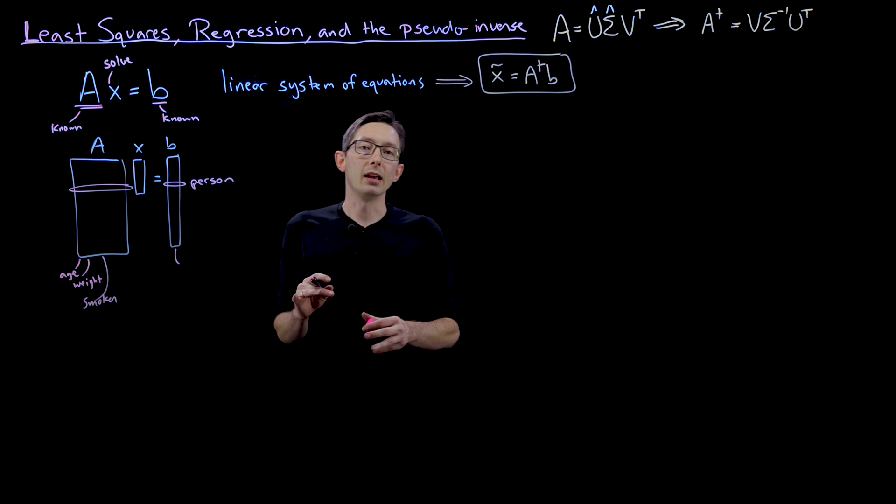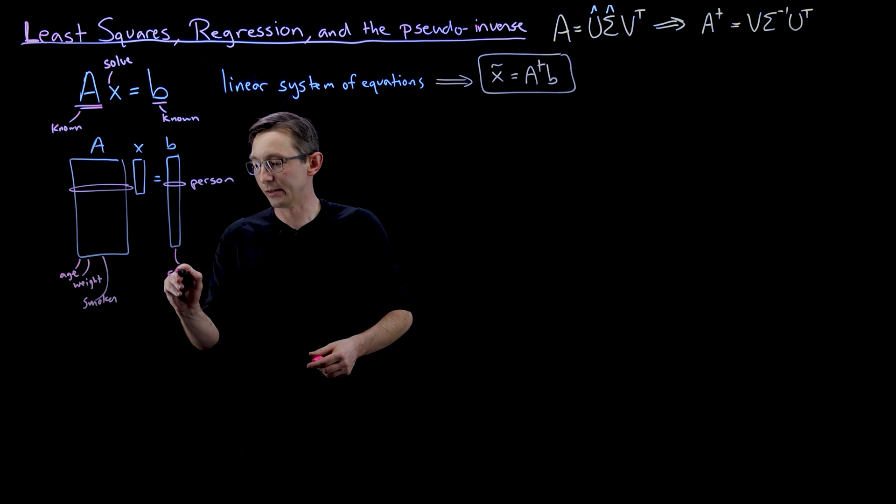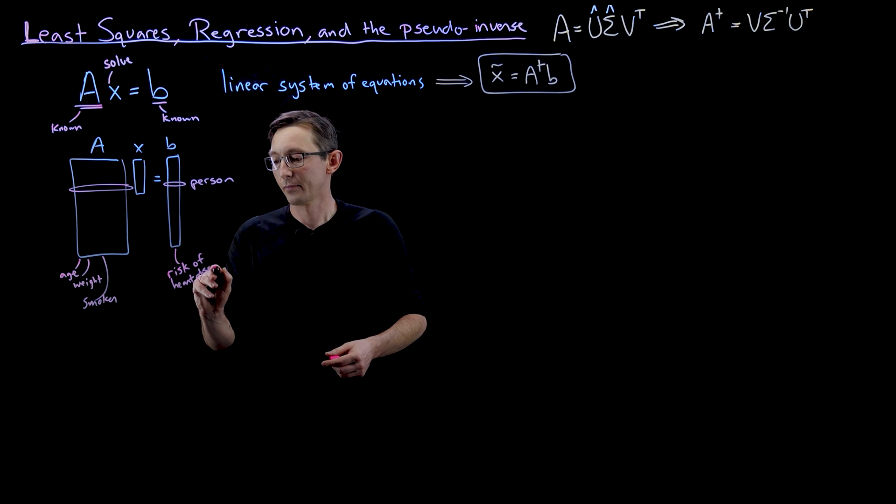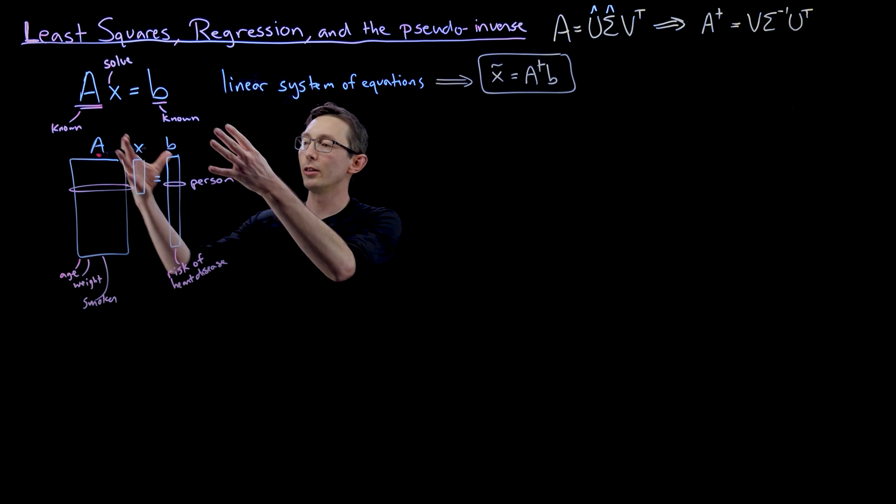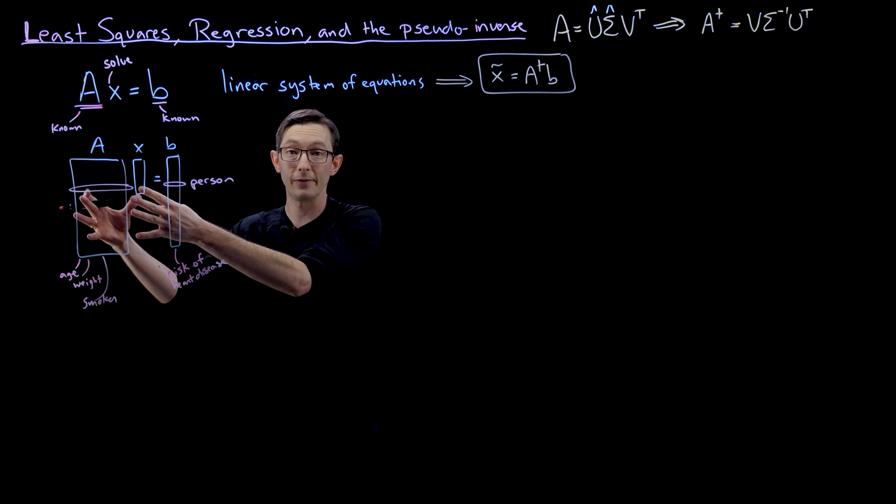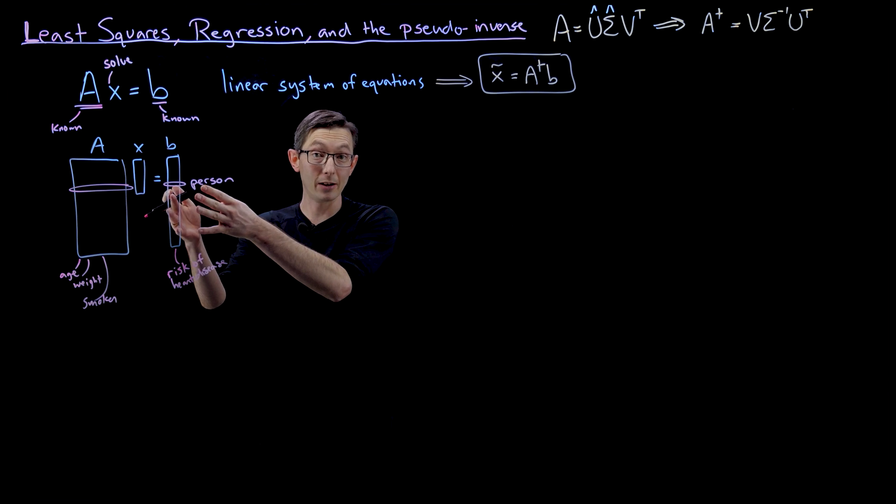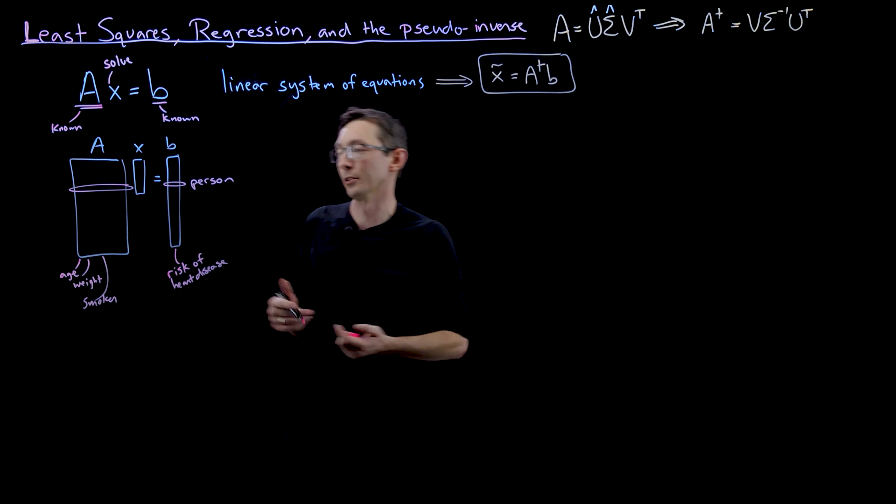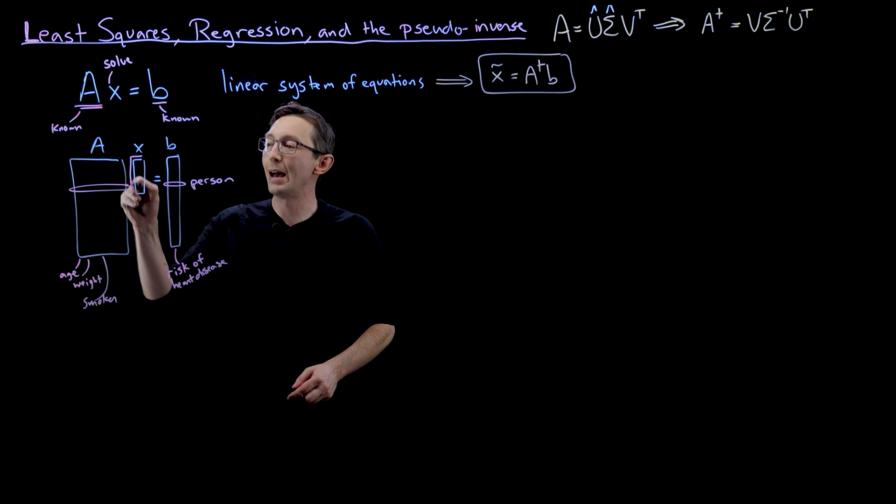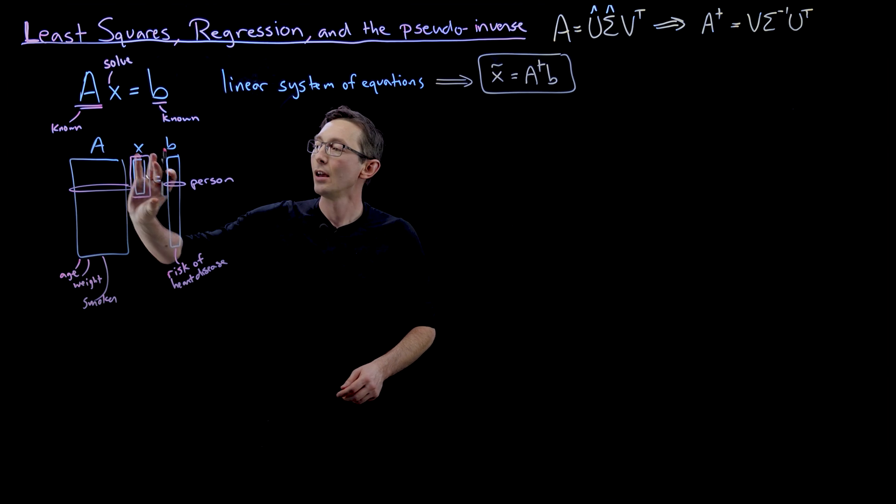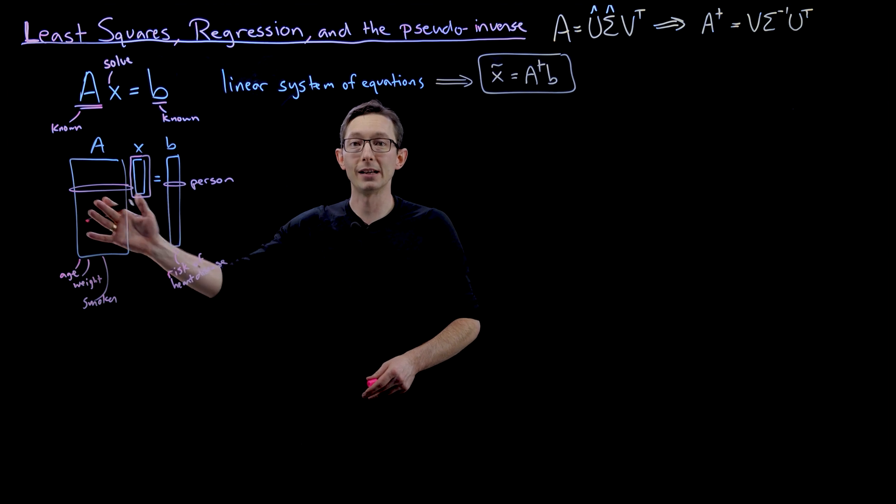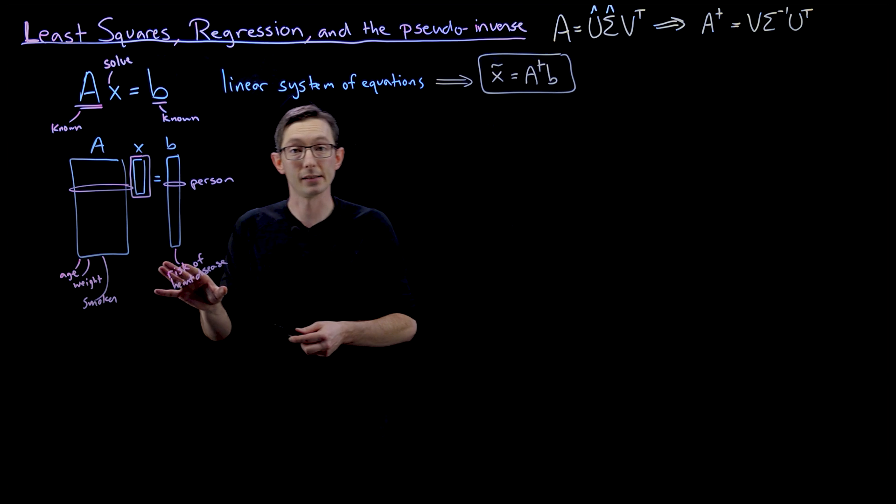And maybe the B vector is your risk of heart disease. And what we would like to do is from a large data set where we actually follow maybe 10,000 people and we measure their risk factors. And then we figure out, did they actually get heart disease at some point in the future? So we actually have data for A and for B. We would want to learn a best fit model X for what combination of those factors describe best or predict best the future risk of heart disease.